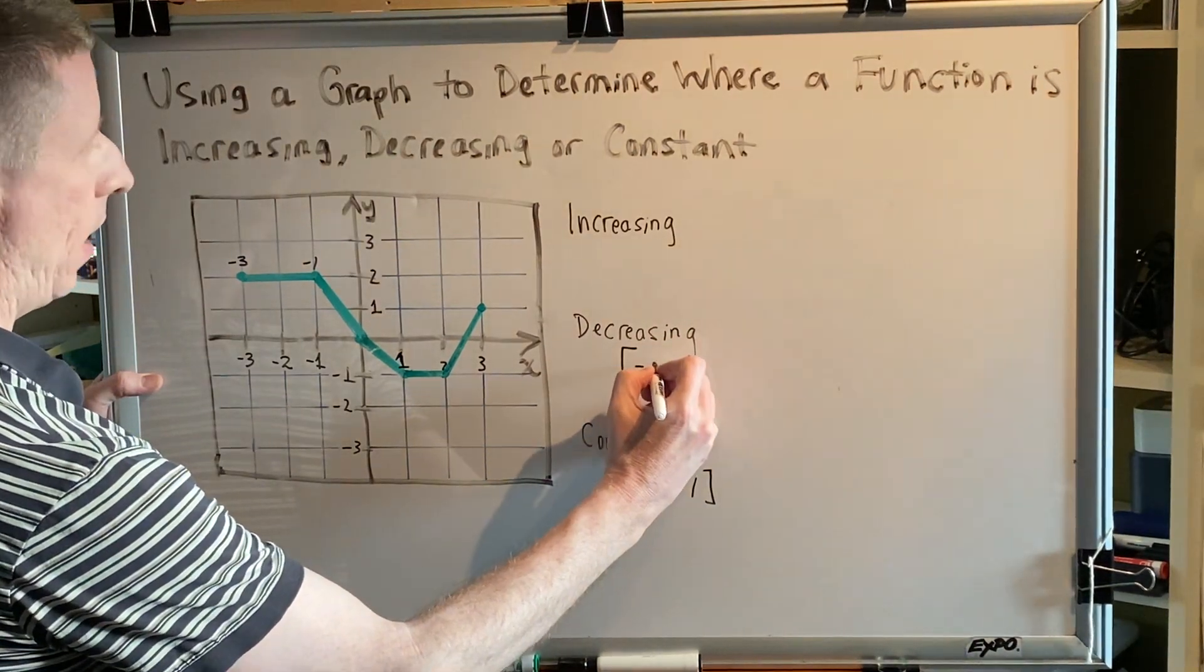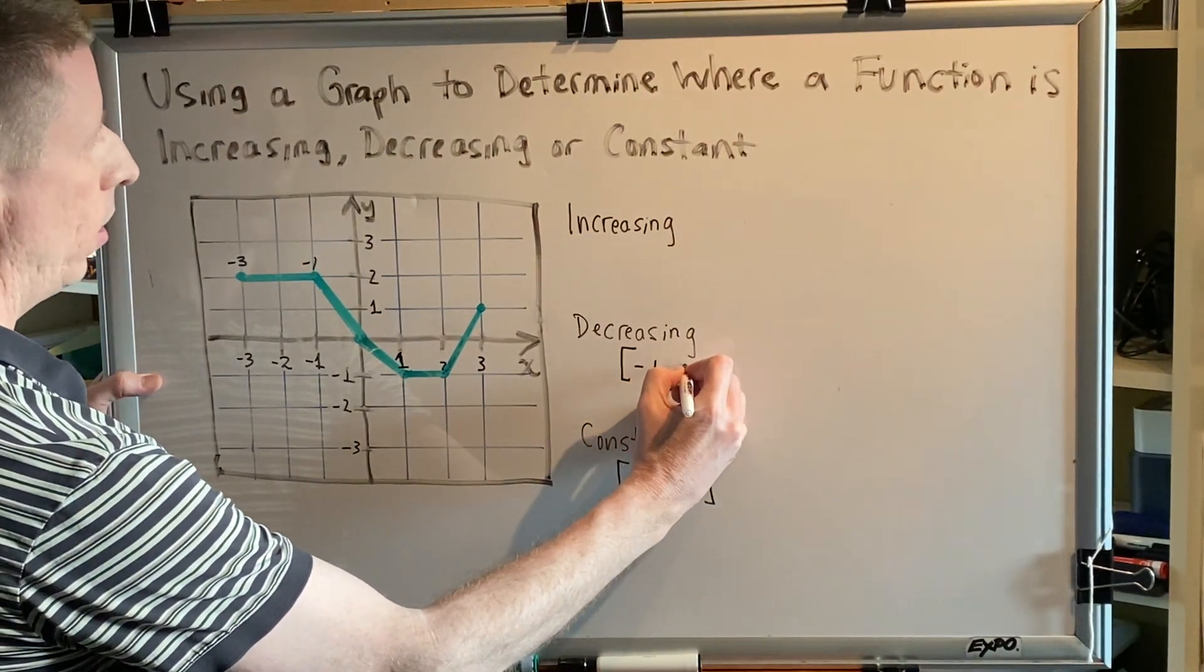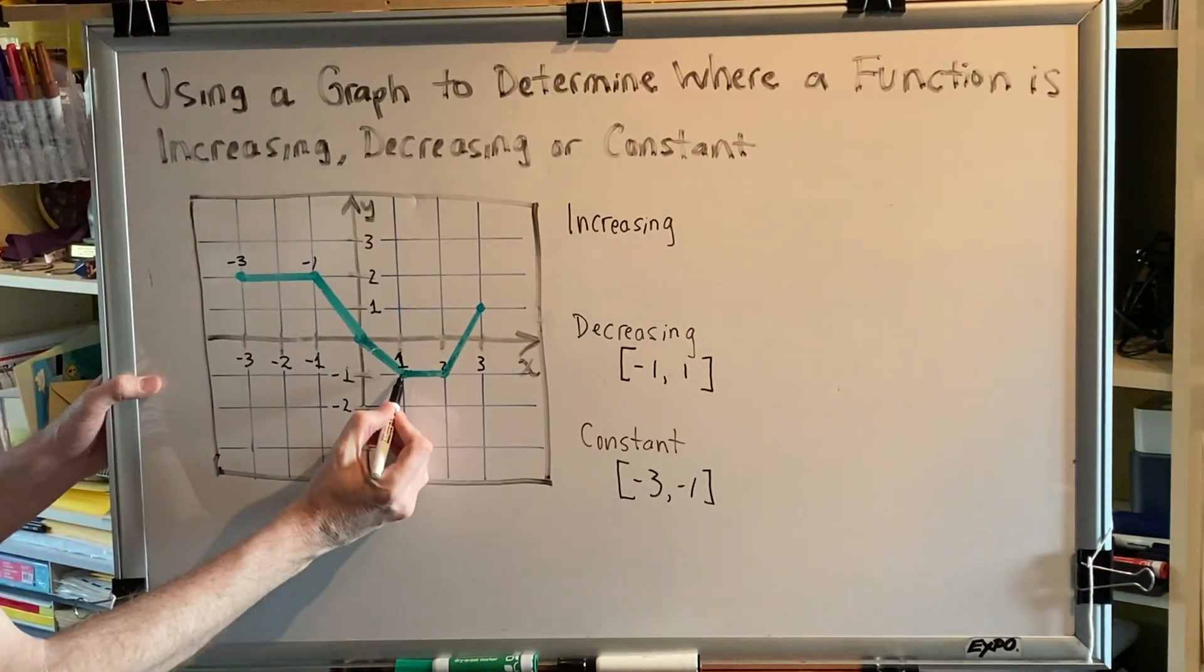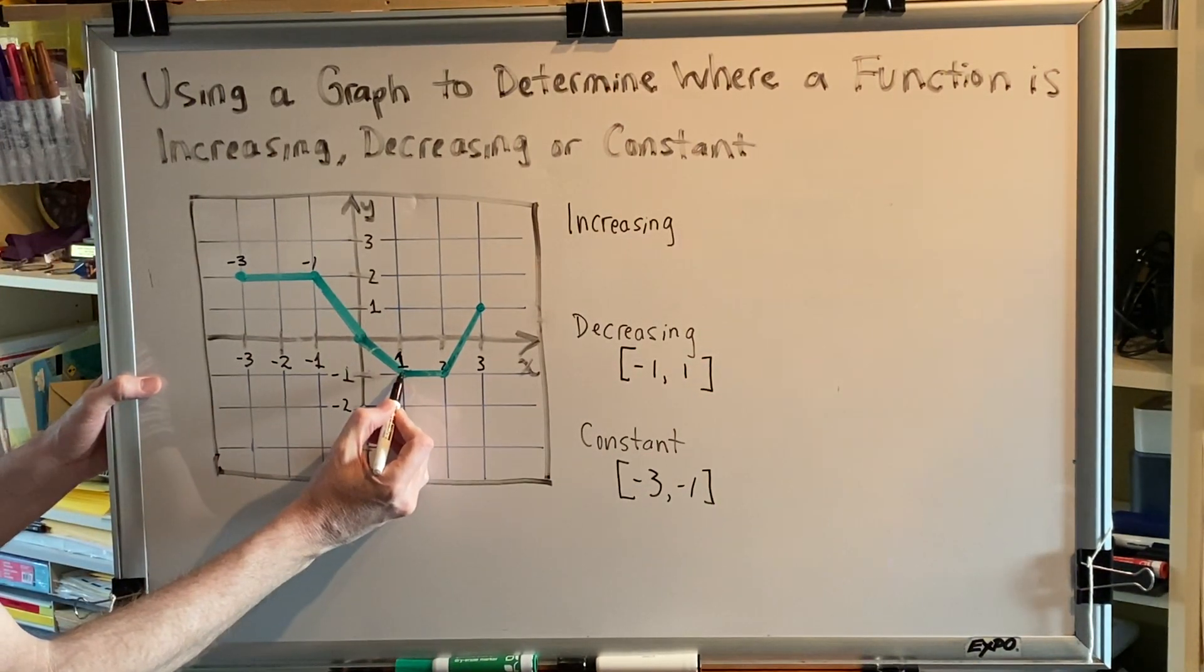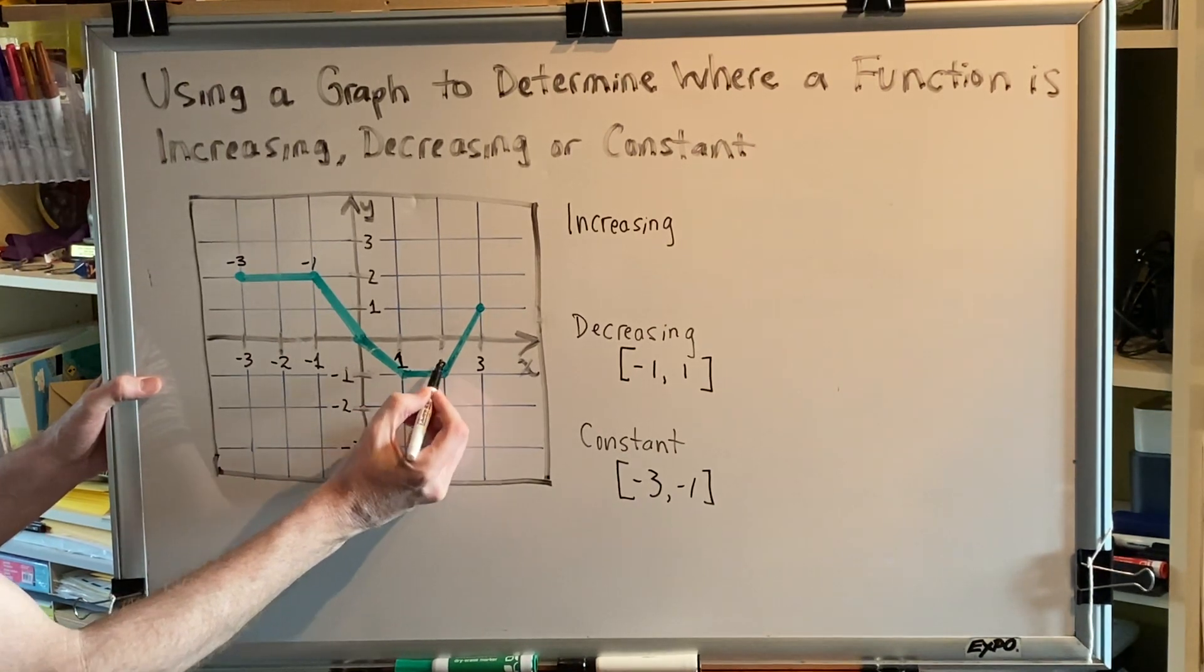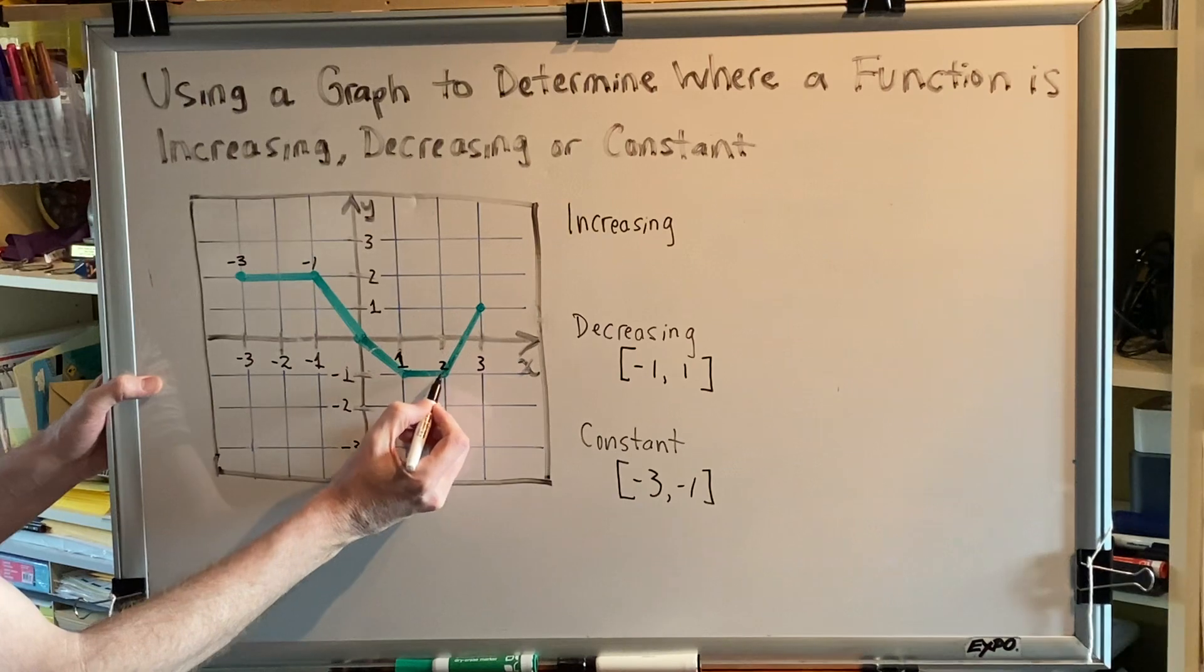So we write this as a closed interval: bracket negative one comma one bracket. As we now move beyond this point with an x-coordinate of one, we find that we are constant again. We are constant from here to here and the second point has an x of two.